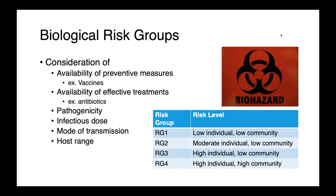Another way we think about risk groups is in terms of who is potentially put at risk if there was to be an exposure. Risk group one would be considered a low risk for both the individual and the community. Risk group two could have moderate implications for the individual but generally a low risk for the community. Risk group three would be a high risk for the individual but a low risk for the community. And risk group four would be a high risk all around.